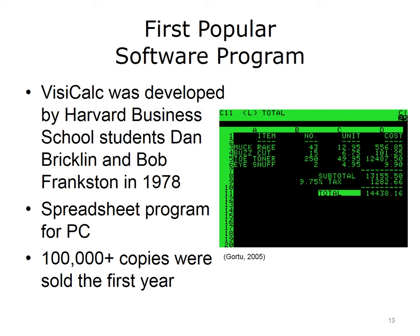Word processing, which had been done on separate, dedicated machines, made a huge impact on the PC world. WordStar was first in 1979, followed by Word for MS-DOS and WordPerfect. Word processing is now one of the biggest applications for PCs.